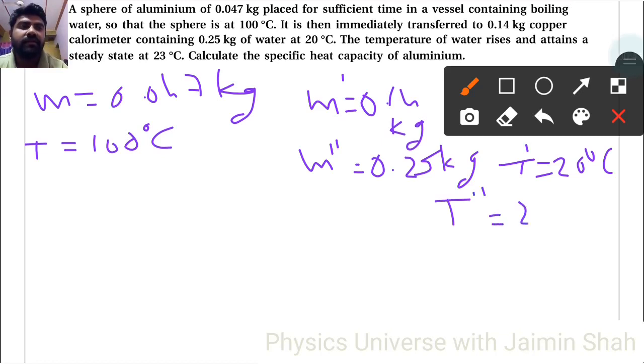Calculate the specific heat capacity of aluminum. First, we use the formula Q1 equals M S delta T. The sphere starts at 100°C and reaches steady state at 23°C.